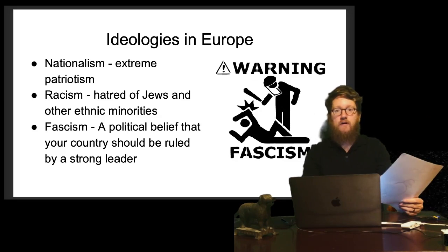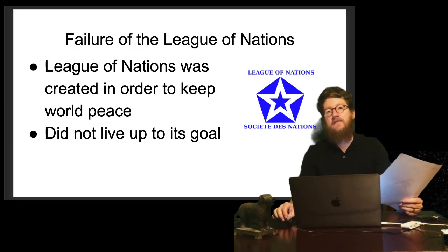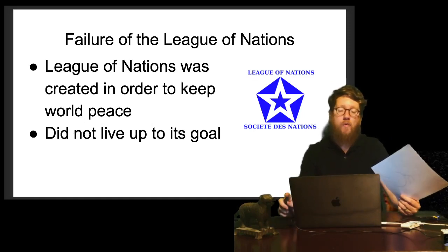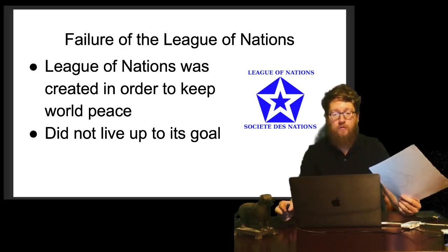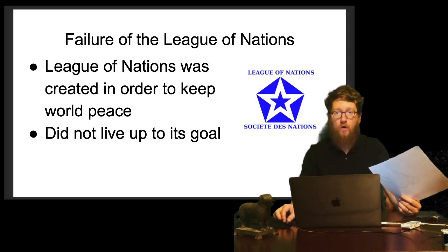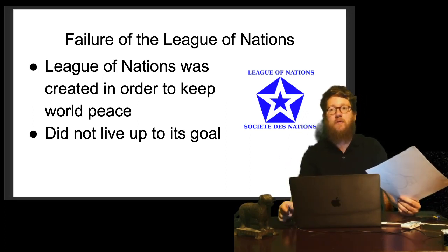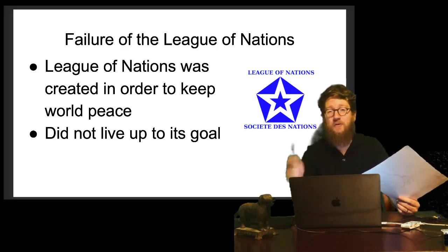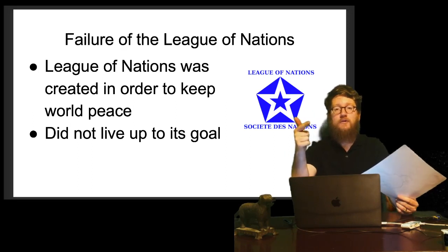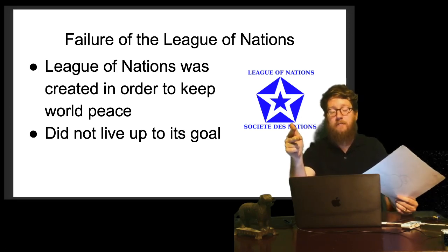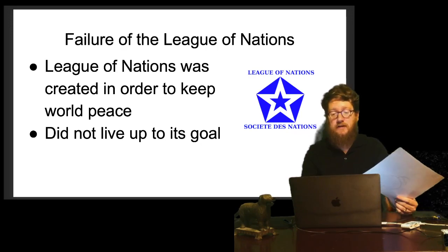The last cause of World War II was the failure of the League of Nations — the organization created after World War I to keep peace in the world, created by Woodrow Wilson. It did not live up to its goal. Probably the biggest mistake was not letting Germany into the League of Nations — how are you going to exclude a country and expect it to play by the rules? So those are the four causes: the Treaty of Versailles being too harsh on Germany; the global depression; the ideologies of fascism, racism, and nationalism; and the failure of the League of Nations.